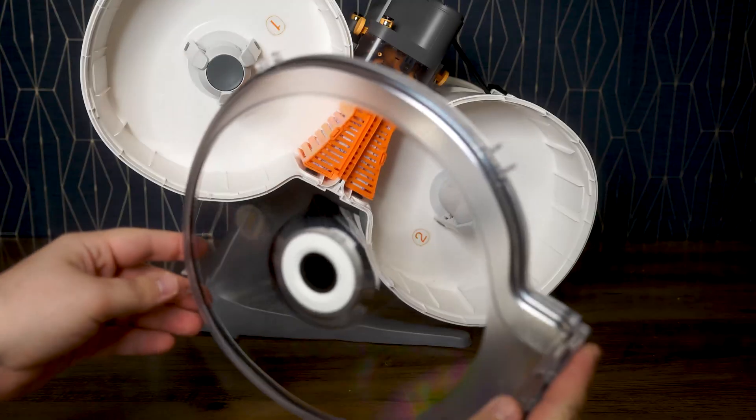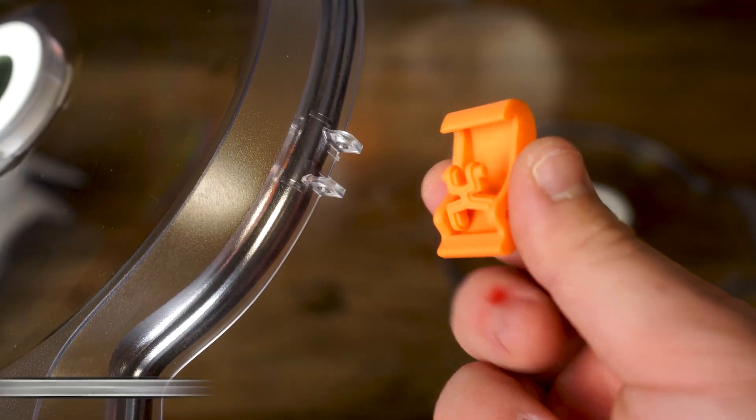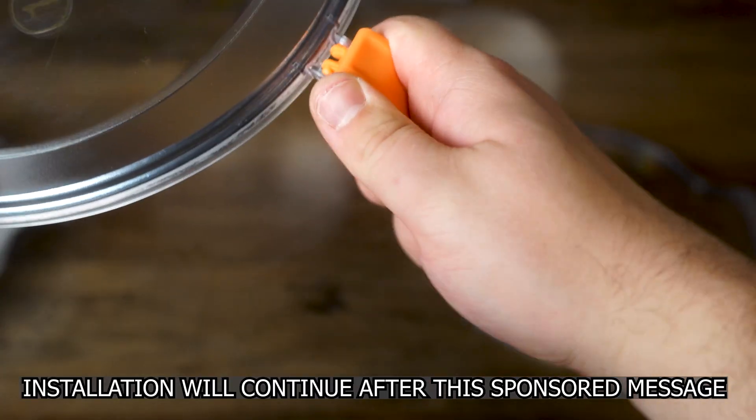Step number six will require us to assemble these plastic latching locks, which I was pretty scared about installing as they seemed like they were going to snap or worse, break the actual cover.